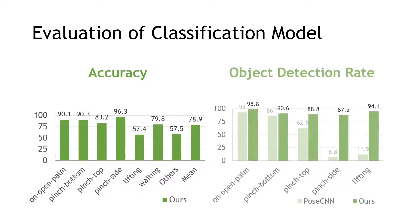In addition, we conduct another experiment to evaluate the detection rate, which is defined by whether there is an object in the hand. This gives insight into how robust our handover system is against hand and object occlusion. We compare the detection rate of our hand grasp classification model with PoseCNN, which is the state-of-the-art 6D pose estimation method.